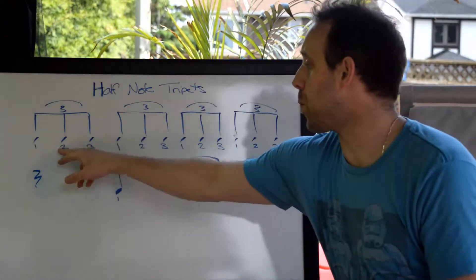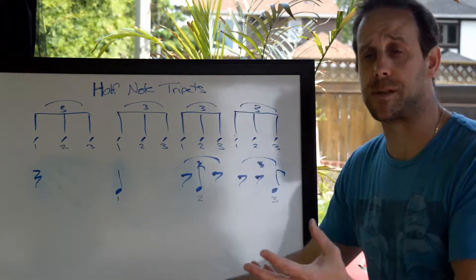Again, these are eighth-note triplets with one, two, three, the numbers underneath, which is correlated to the placement of the triplet.